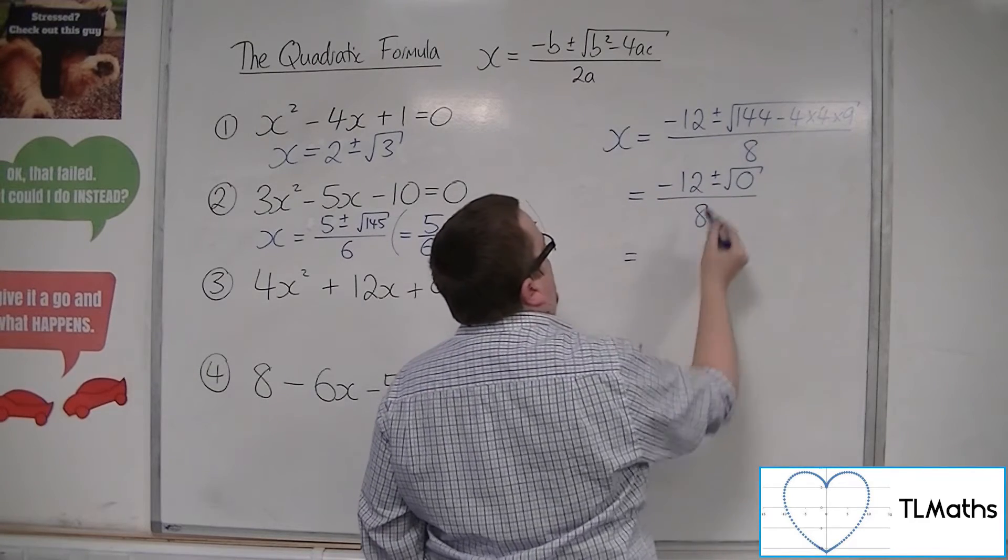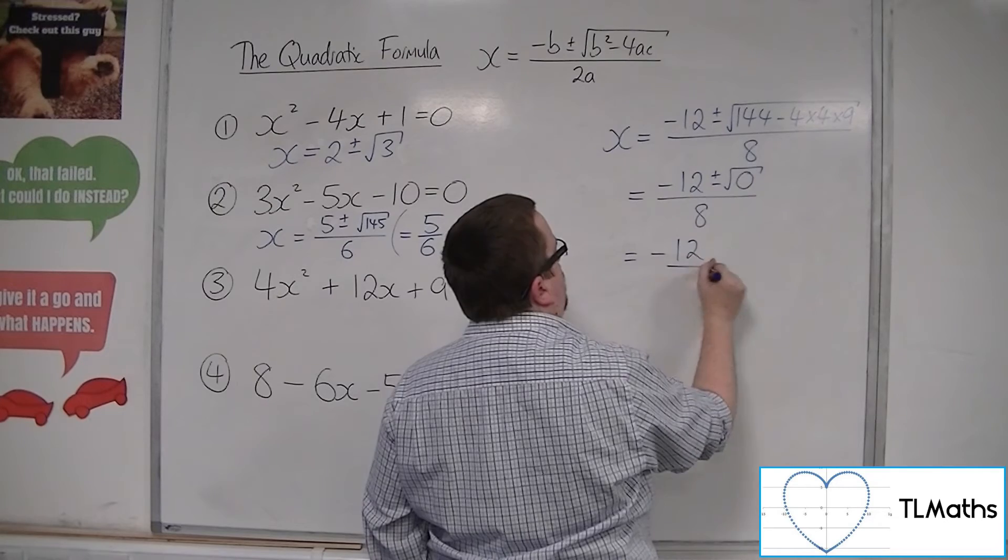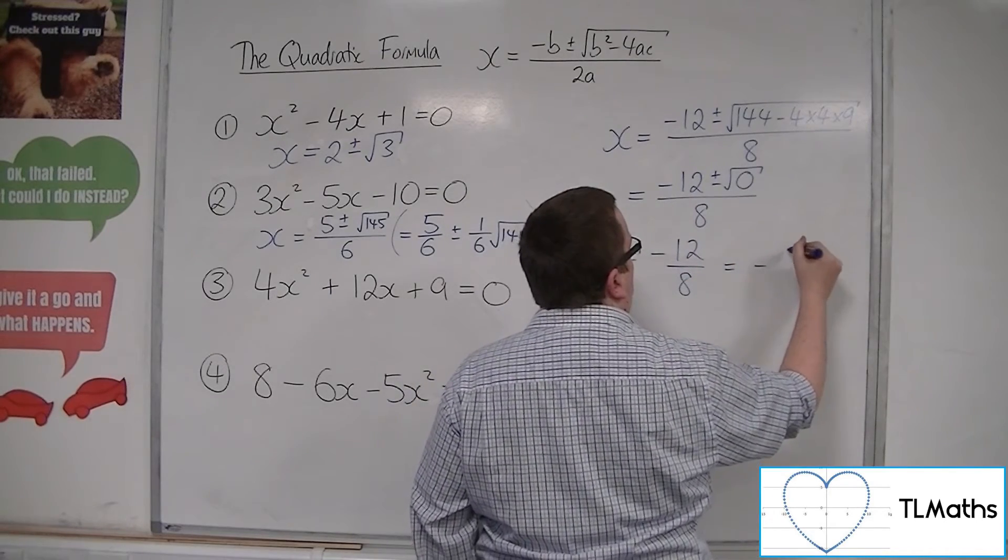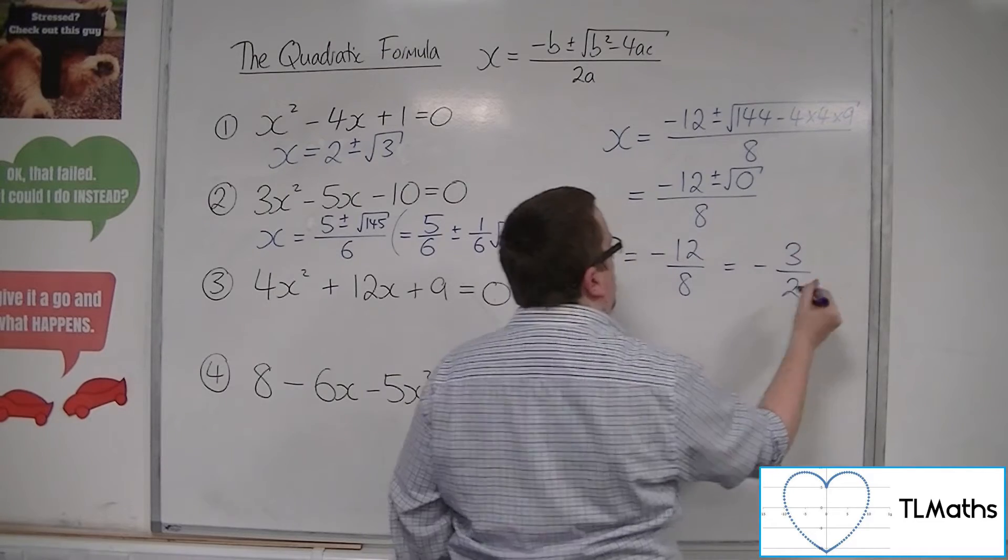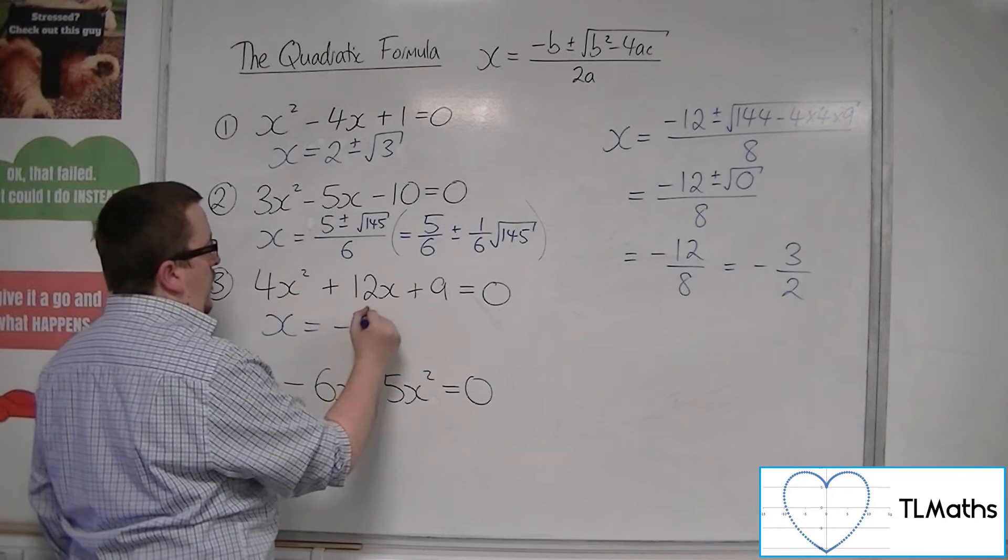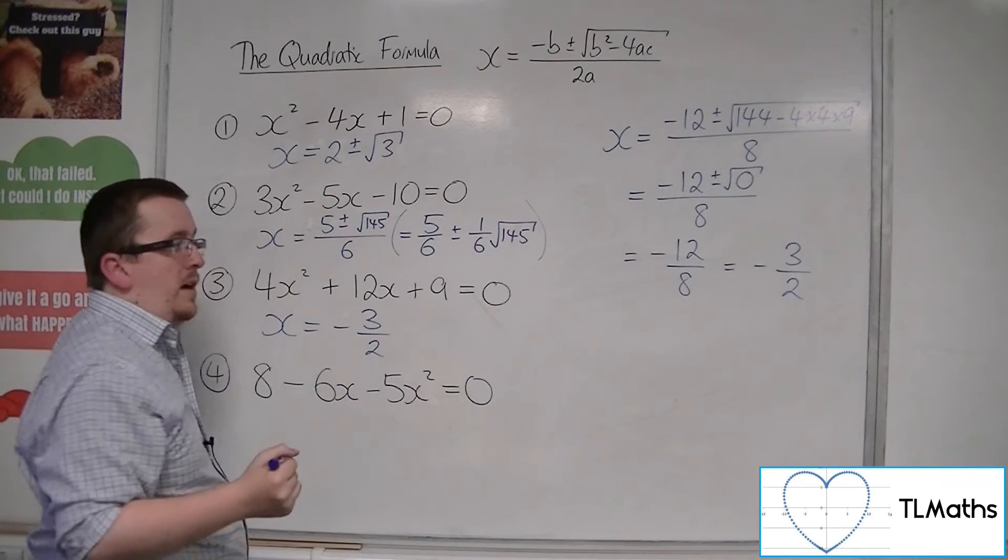So we just have minus 12 over 8, and that of course can be simplified dividing top and bottom by 4, so we get minus 3 over 2. So there's actually one solution to this quadratic equation, minus 3 halves.